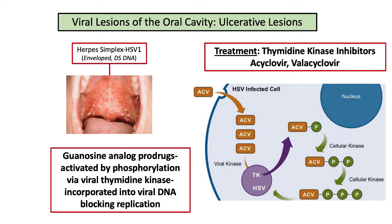Active HSV infections can be treated with acyclovir or valacyclovir. Both of these agents are activated by a viral thymidine kinase, which phosphorylates the guanosine analog and is then incorporated into viral DNA during replication, subsequently ceasing viral replication by chain termination. These medications are only efficacious for an active infection and have no effect on latent HSV. Because activation of both acyclovir and valacyclovir is dependent on viral thymidine kinase, they have no effect on uninfected cells and therefore have few adverse effects.